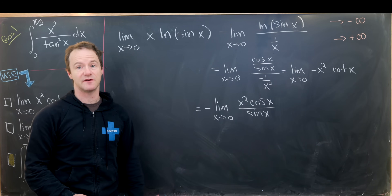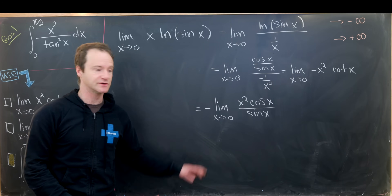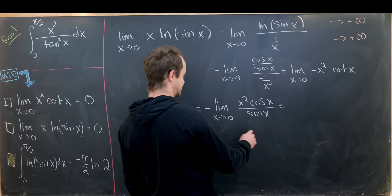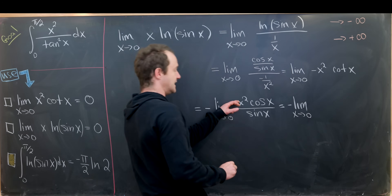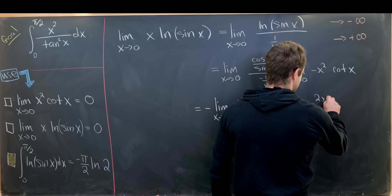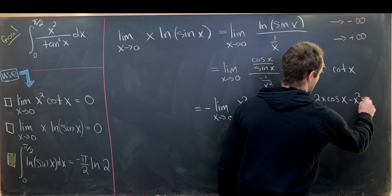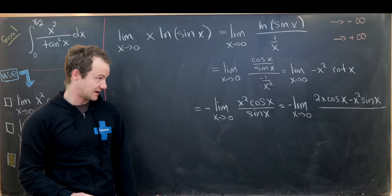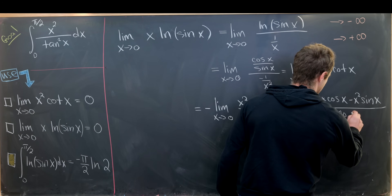This is of type 0/0 as x→0, since x²→0 and sin(x)→0, so we can apply L'Hôpital's rule again. Using the product rule in the numerator, we get minus the limit as x→0 of (2x·cos(x) − x²·sin(x)) over cos(x).